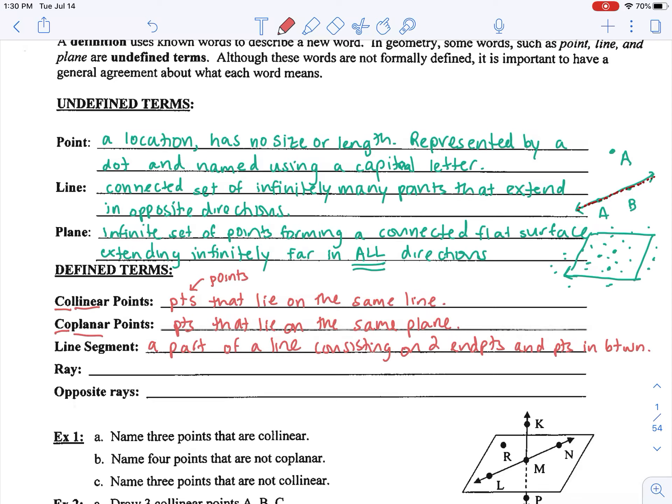A ray is if I imagine a line, but instead of cutting off both infinite ends, I just cut off one side that is infinite. So I get a part of the line consisting of an endpoint and all points on one side of the endpoint.